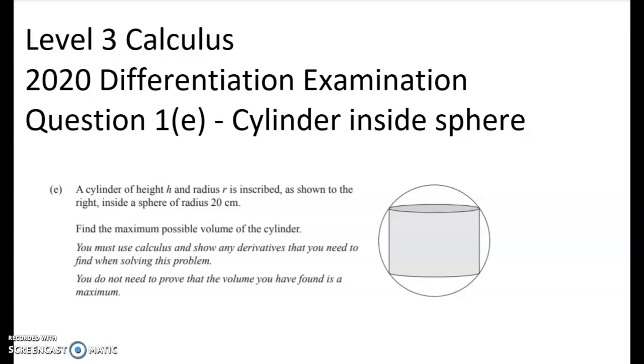We're given a cylinder of height H and radius R, inscribed, as shown to the right, inside a sphere of radius 20 centimeters. So looking at that, if we think about this point here as being the center of the sphere, the radius of the sphere is 20 centimeters. That's not the same as the radius of my cylinder.